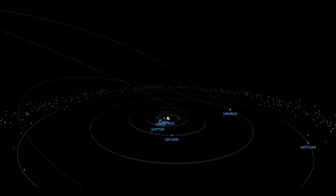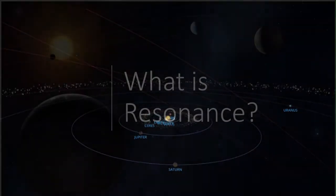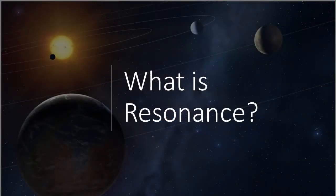Orbital resonance occurs throughout the solar system, including shaping Saturn's rings. So let's look at what resonance actually is. There are a few different types of resonance that are all similar, but we're going to focus on just orbital resonance.